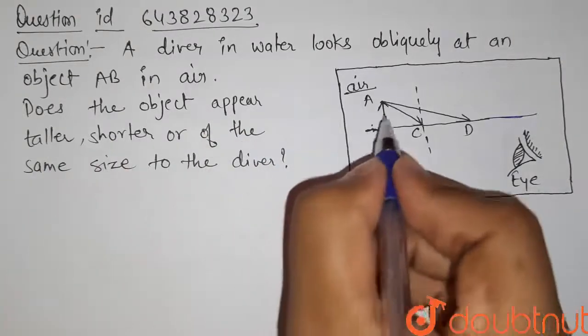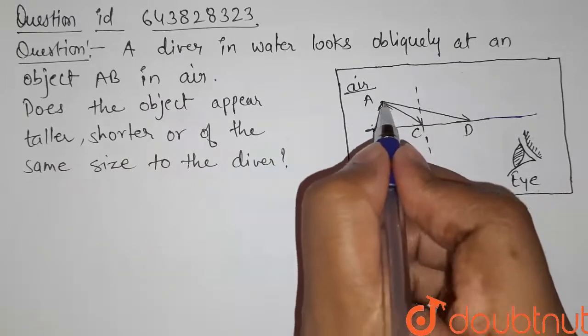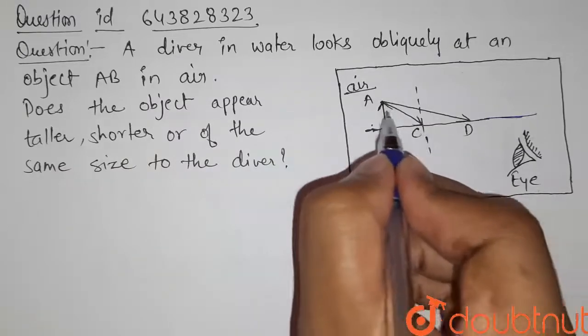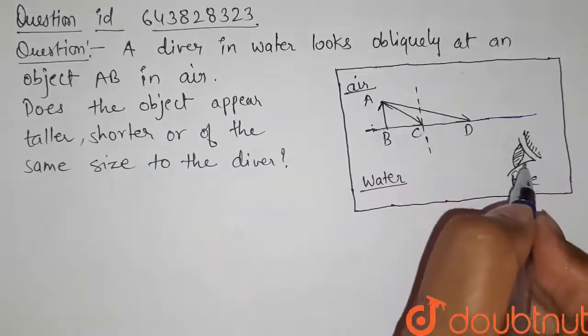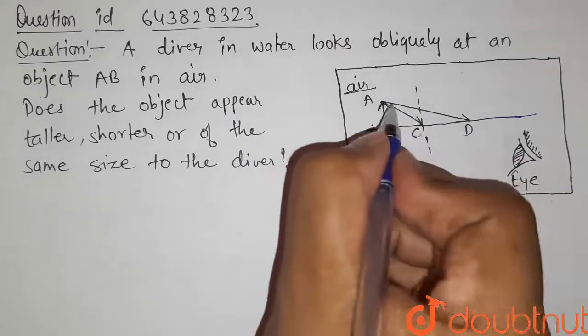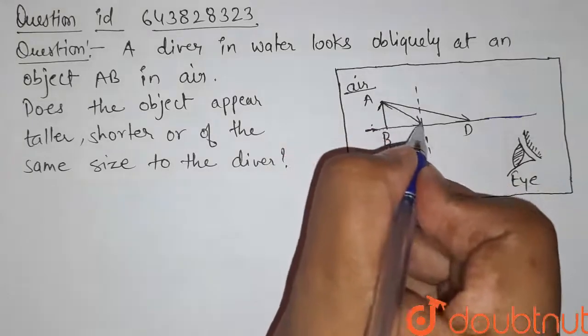Does the object appear taller, shorter, or of the same size to the diver? So we have to tell whether the object is looking taller, shorter, or of the same size to this diver.